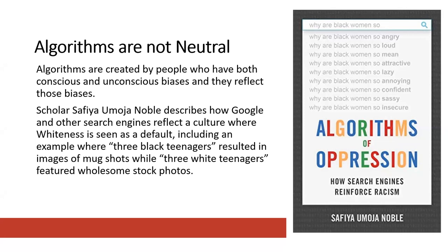These kinds of stories pop up every couple of years. Google is always apologetic when these things happen, and usually the algorithm gets updated pretty quickly. Professor Noble responds to this by asking: if the change to the algorithm could be made so quickly, why wasn't it made much earlier? So that is something to think about.